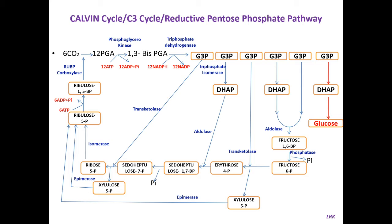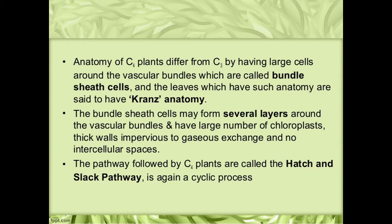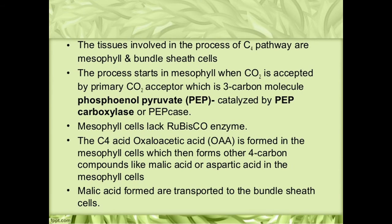The remaining 10 molecules of glyceraldehyde 3-phosphate regenerate 5 molecules of ribulose 1,5-bisphosphate. This is the C3 cycle. In C4 cycle, there is a difference between the mesophyll and chloroplast structure compared to C3 plants. Kranz anatomy is seen in C4 cycle. C4 plants differ from C3 by having large cells around the vascular bundles called bundle sheath cells, and the leaves which have such anatomy are known as Kranz anatomy. Kranz anatomy is seen only in C4 plants; it is absent in C3 plants.